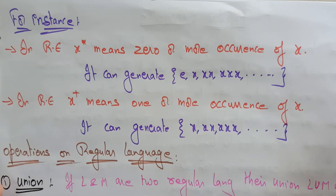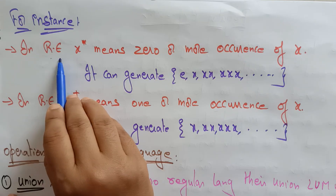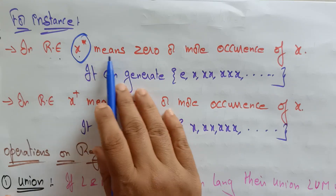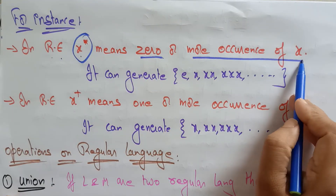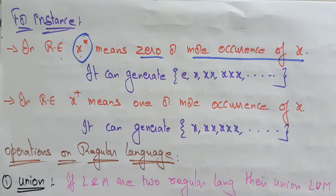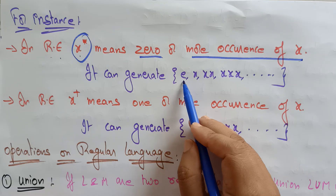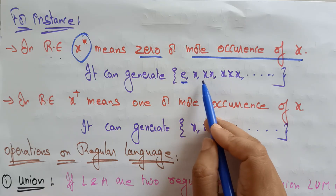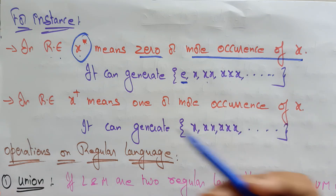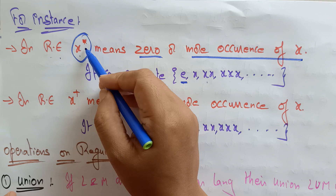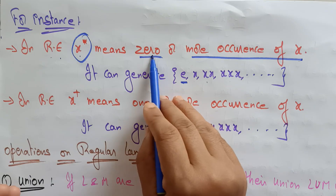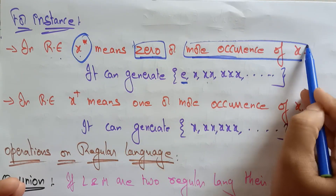For instance, take the regular expression x* — we call it x closure, or Kleene closure. X* means zero or more occurrences of x. So x* can generate the empty string epsilon, x, x², x³, x⁴, and so on.